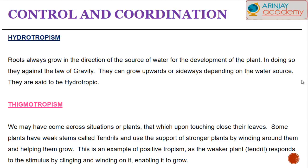Hydrotropism deals with water. We know there are different kinds of roots — crop roots that grow from the ground up, and the normal tap and fibrous roots that grow down into the ground. Roots always grow in the direction of the source of water because water is essential for the development of the plant. In doing so, they may defy the law of gravity — depending on the nature of the plant, roots can grow upwards or sideways, but most commonly downwards. Since they always grow in the direction of water, they are said to be hydrotrophic.